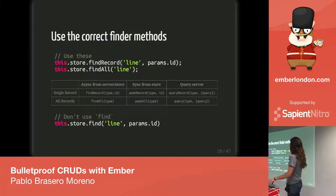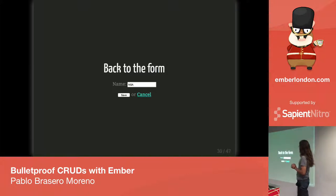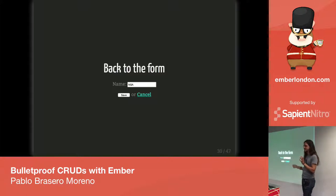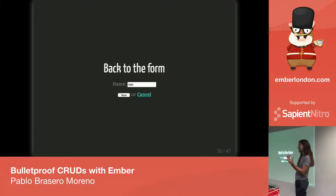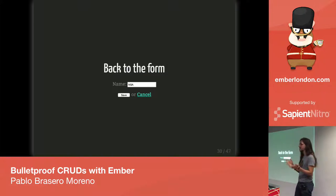Back to the route — let's go back to the form for an instant. The save action is simple: you get the record that has been sent along with the action, save it, and then on resolution of the promise you transition away and you're done.